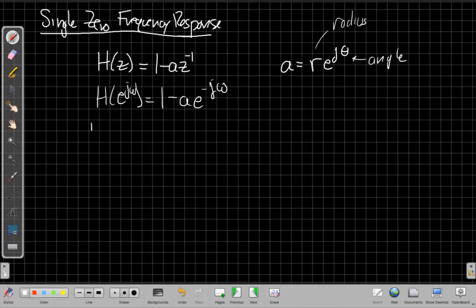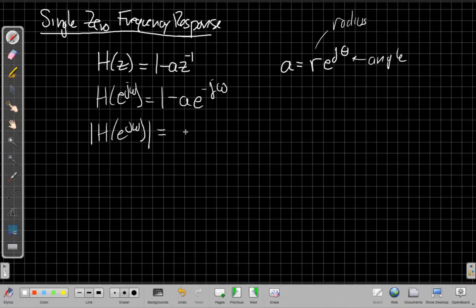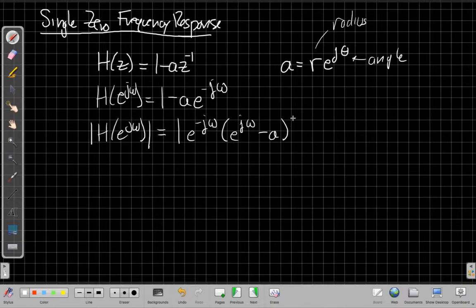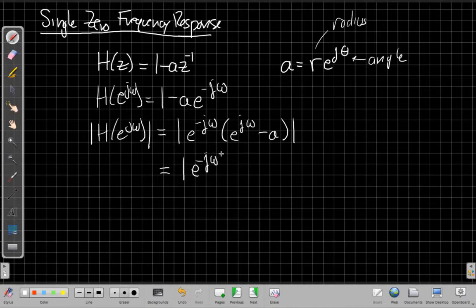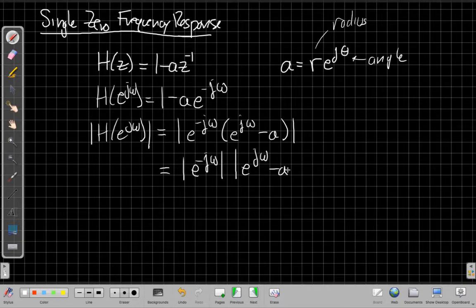And that will be helpful in a minute when I'm going to draw a geometric picture about this. And so now if I want to take the magnitude of this, I'm also going to do one of these annoying things professors do, which is I'm going to factor it in a strange way that only makes sense because I know the final answer I'm trying to get to, which is I'm going to pull an e^{jω} out front, which at first looks like it's making things more complicated. But so my 1 becomes an e^{jω} minus a. I have the magnitude of this product I can write as the product of the magnitudes. So I have the magnitude of e^{-jω}, the magnitude of e^{jω} minus a, where a may be a complex number.